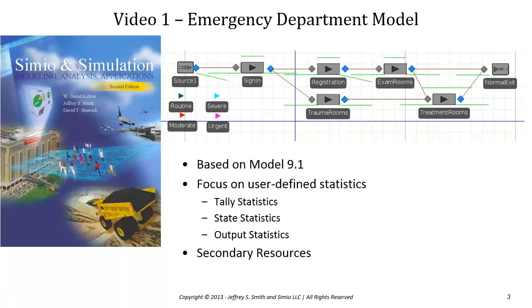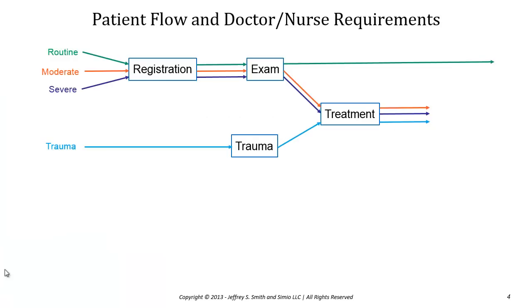For the emergency department model, there are four different patient types: routine, moderate, severe, and trauma patients, and they all follow a different path. Routine patients go through registration and examination, then leave. Moderate and severe patients go from registration to exam to a treatment room, then leave. Trauma patients go directly to a trauma room, then treatment, and then leave.